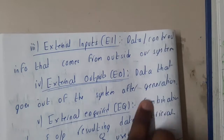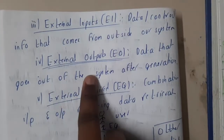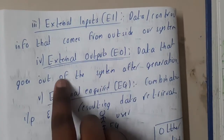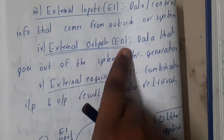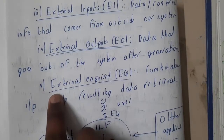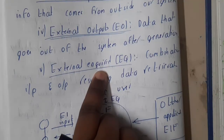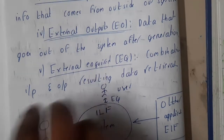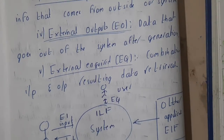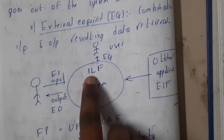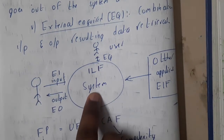Similarly, External Input (EI) is the data or control info that comes from outside of our system — from outside coming to inside. External Output (EO) is data that goes out of the system. And External Enquiries (EQ) are queries done for external things — a combination of input and output resulting in data retrieval.